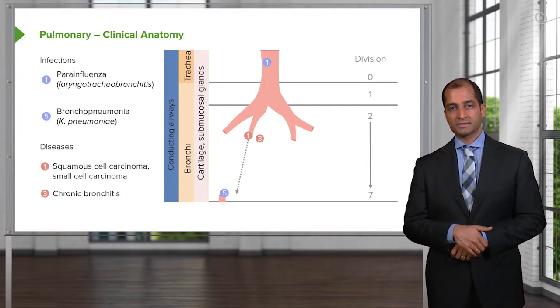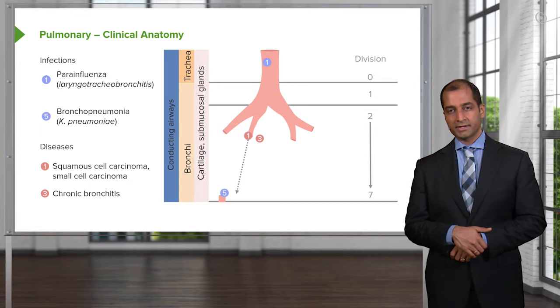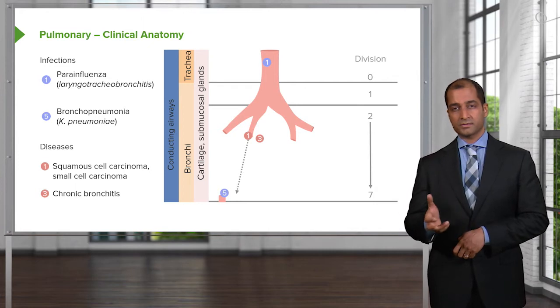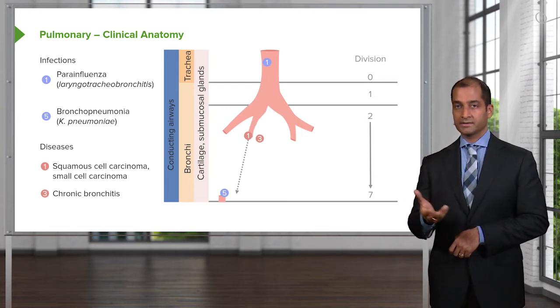Let's take a look at parainfluenza virus. You've heard of laryngotracheobronchitis. Now, close your eyes and think of this anatomically in terms of sequence. What's the first structure? Larynx. What's the next structure? Distal. Trachea. What's after that? Ah, bronchi. There you have it.